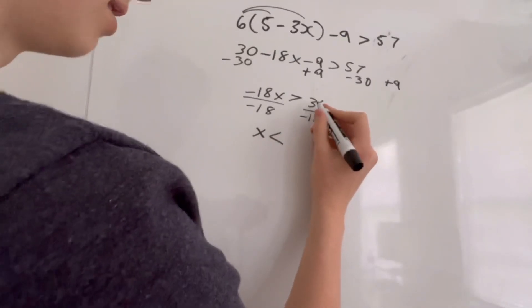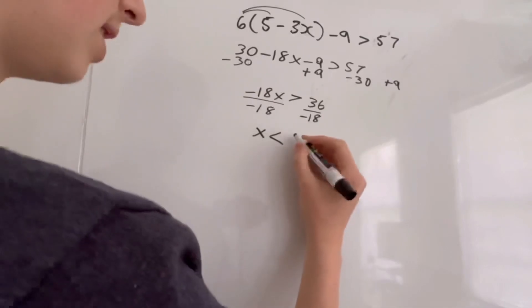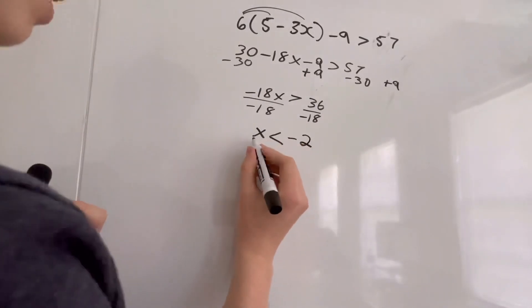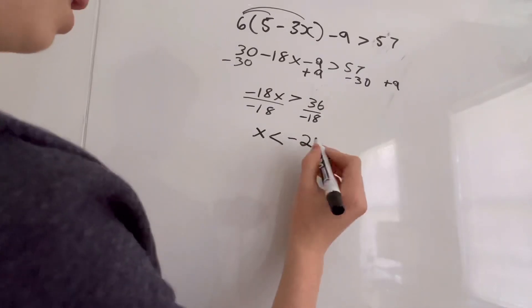So we have to do 36 divided by negative 18, which is negative 2. And this would be our answer. x is less than negative 2.